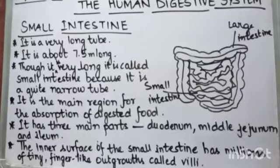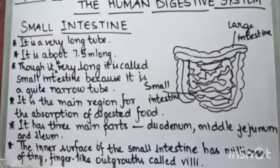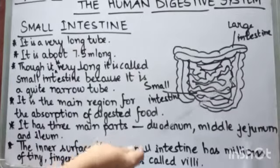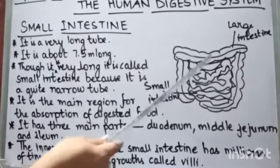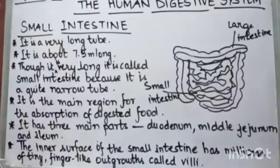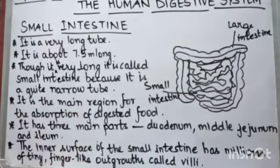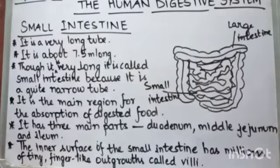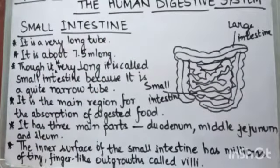Now comes the small intestine. The small intestine is actually a coil-like structure — as you can see here — and this one is the large intestine. The small intestine is a very long tube, about 7.5 meters long. Though it is a very long tube, it is called the small intestine because it is a very narrow tube.